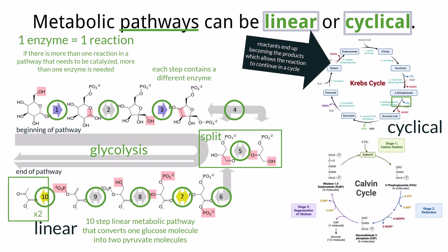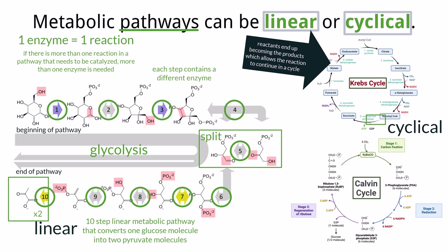For a cyclical pathway, the beginning reactants of the pathway also end up being the products at the end. Along each step of the way, the new product becomes the substrate for the next enzyme. For this reason, cyclical pathways like the Krebs cycle and the Calvin cycle can continue to happen as long as the proper materials are in place — they are designed to perpetually work in a cycle. We will discuss the details of these reactions in C1.2 and C1.3, but don't let these diagrams scare you. It's all just a series of small chemical changes supported by enzymes — it should be more fascinating than daunting.